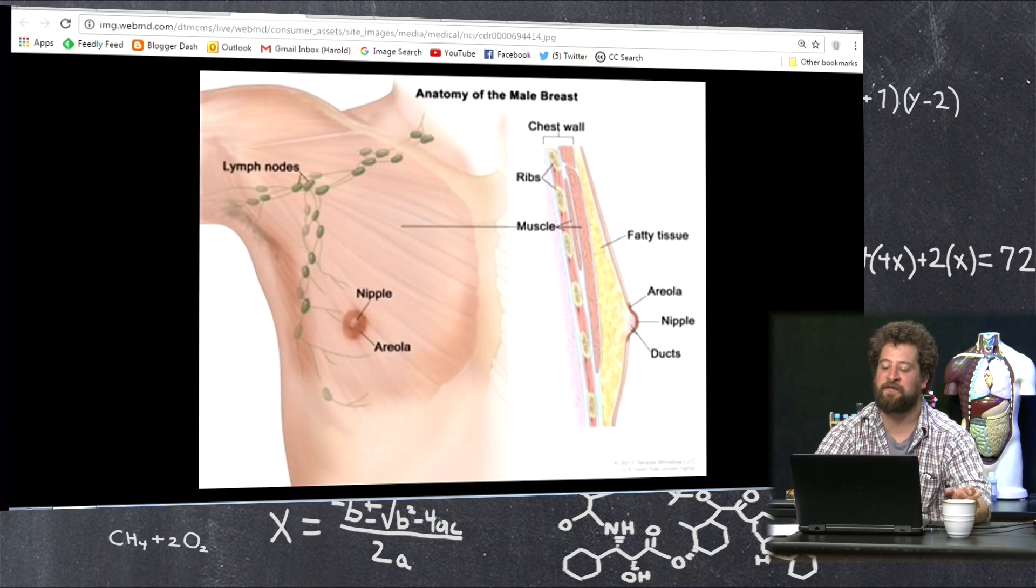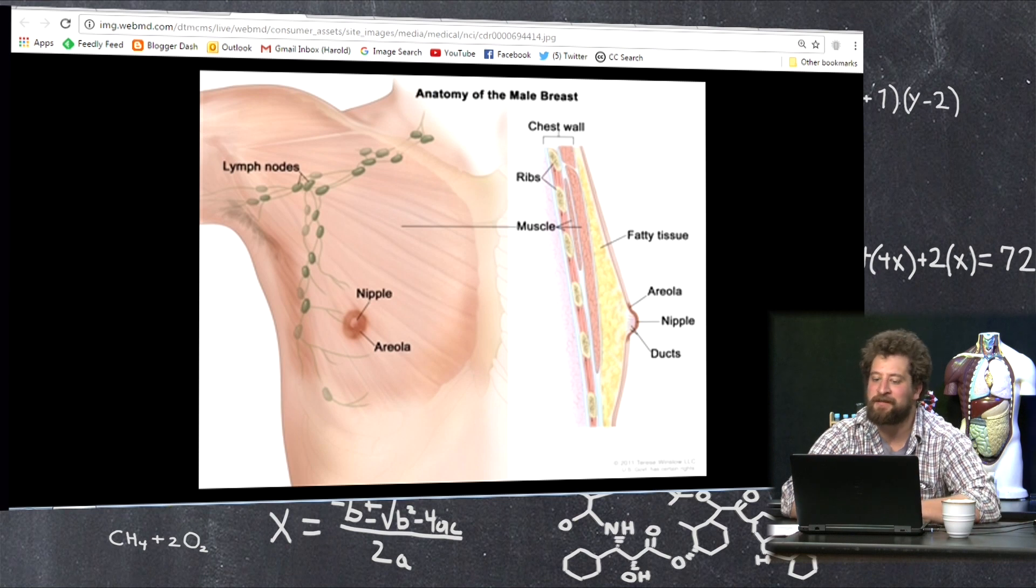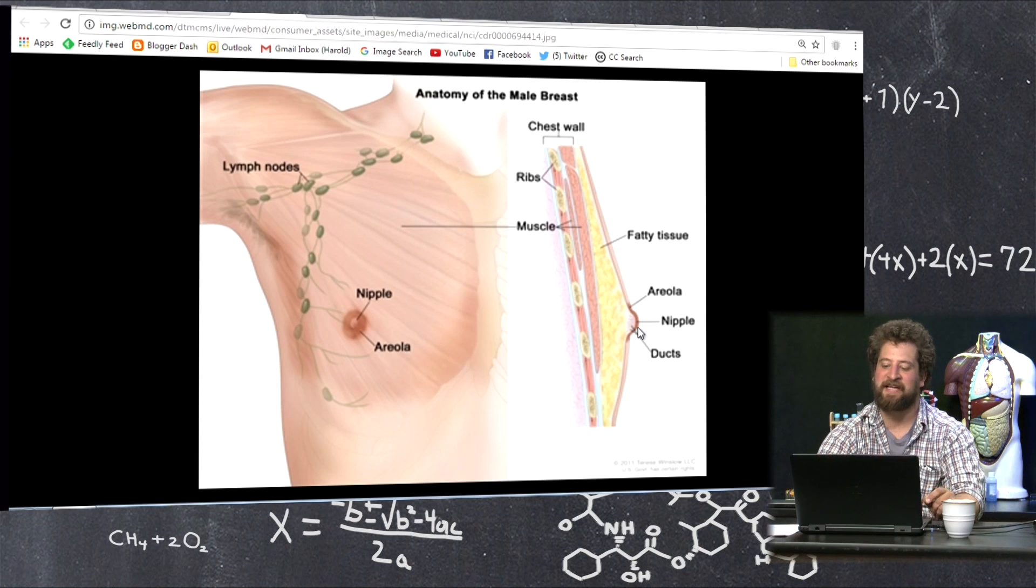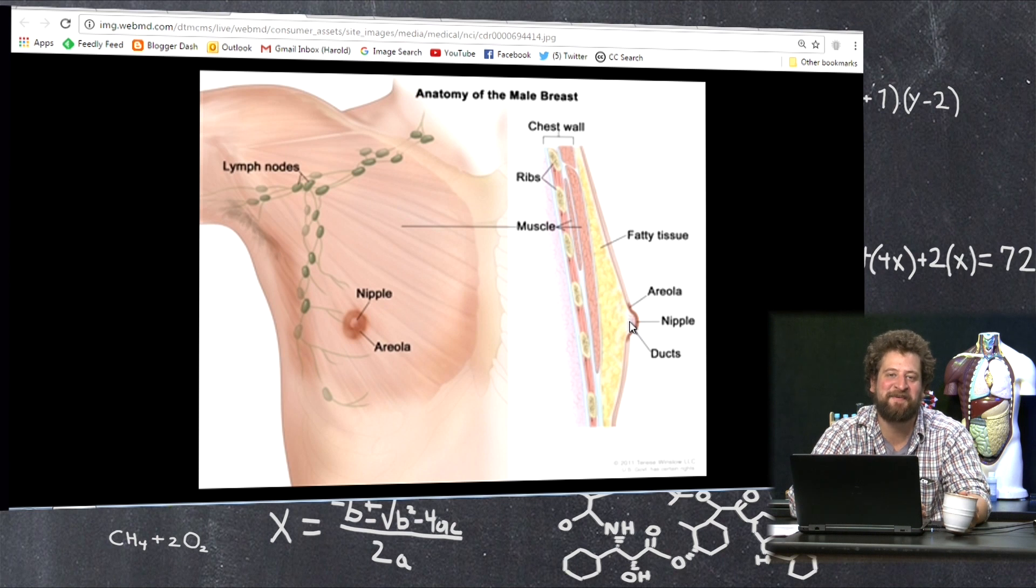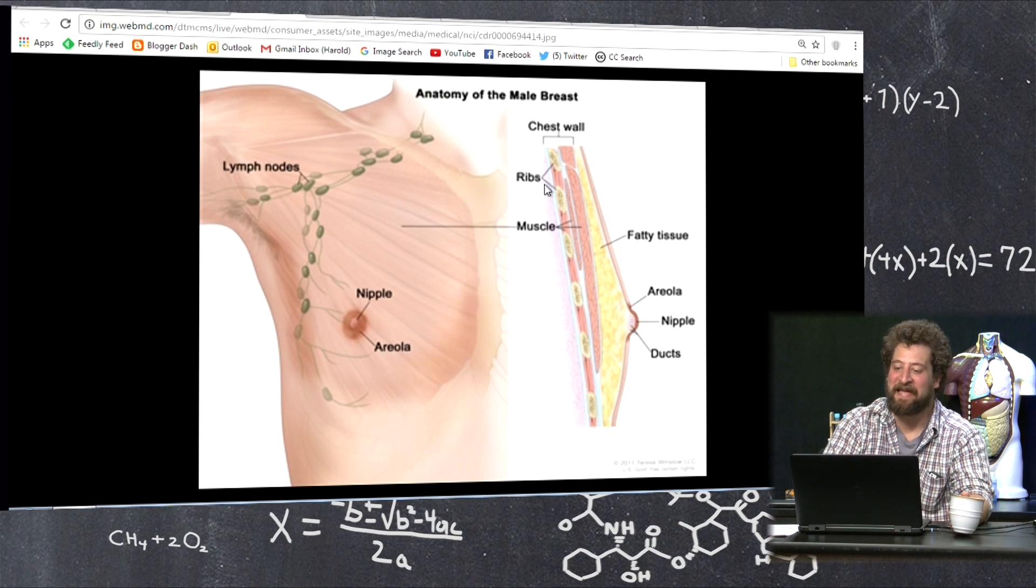And really interestingly, if you look at this diagram of the anatomy of a male breast, and you can't see it perfectly here, but you can see the label here indicates that there are ducts still. It's something that is kind of funny. Male nipples do have ducts as if they could conduct some sort of a fluid in that direction.